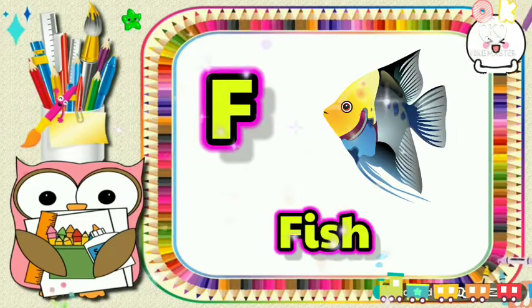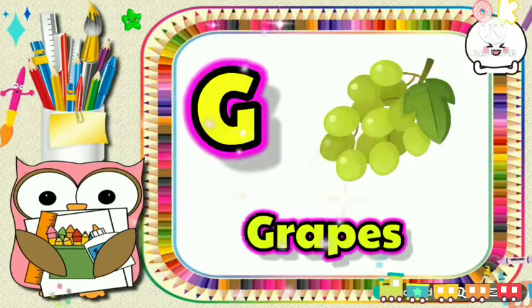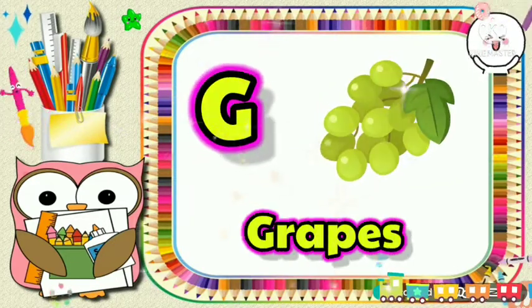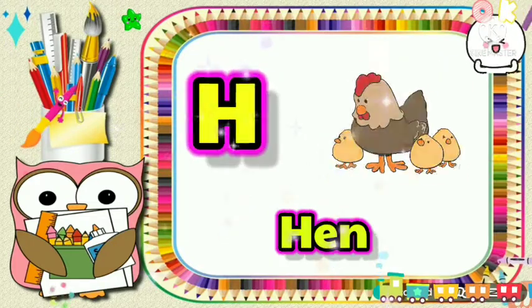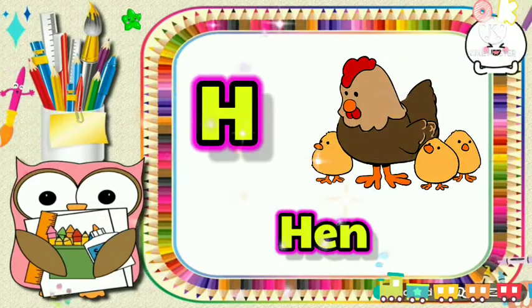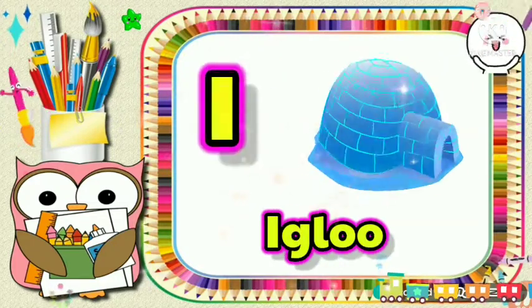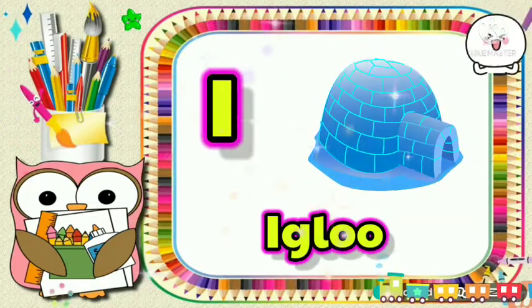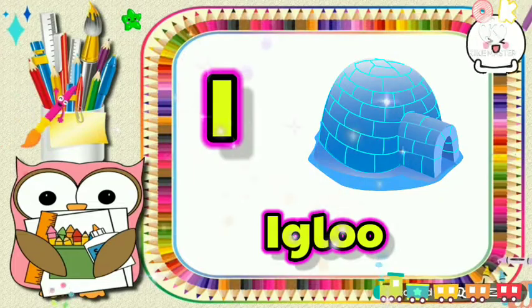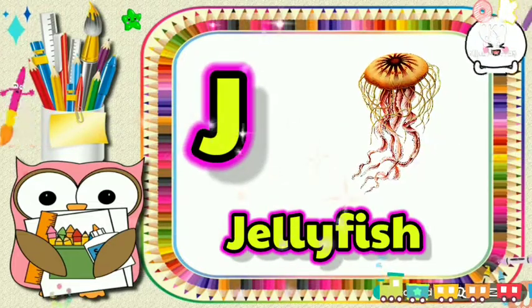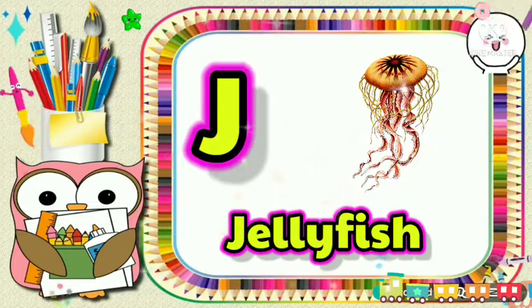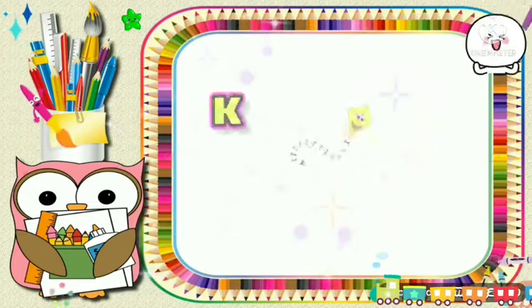F for fish, G for grass, S for hen, I for igloo, J for jellyfish.